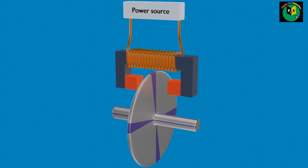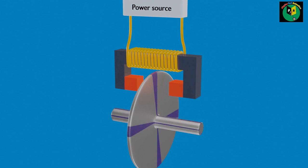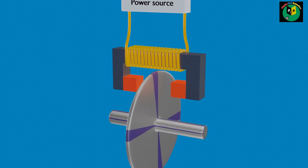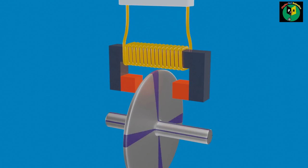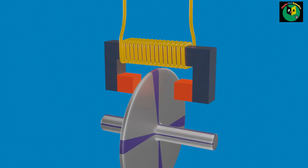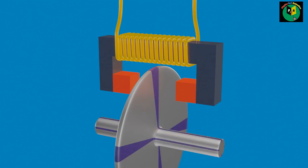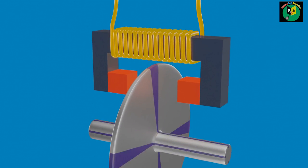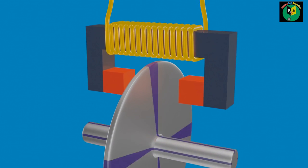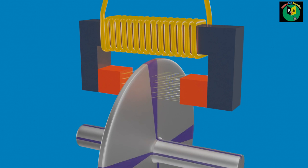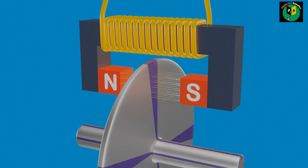Now, current is allowed to flow through the coil. Therefore, due to electromagnetism, the iron core becomes an electromagnet and develops magnetic field lines passing through the surface of the metallic disk, directed from the north pole to the south pole.